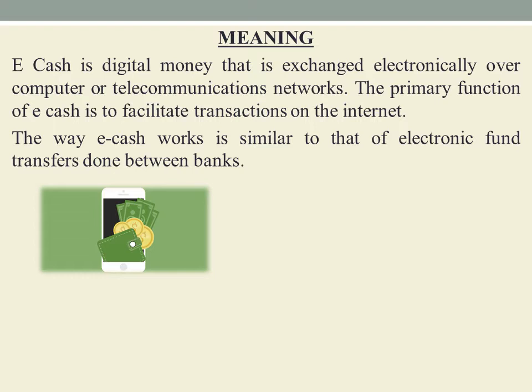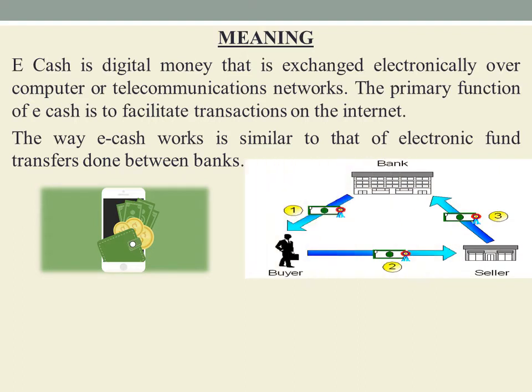In the eCash system, a particular individual has a bank account. The bank issues e-coins that have an ID number. The eCash payment system works as follows: if you have an account, the bank will provide that amount of e-coins. Each e-coin has one ID number, and the bank will digitally sign each coin.